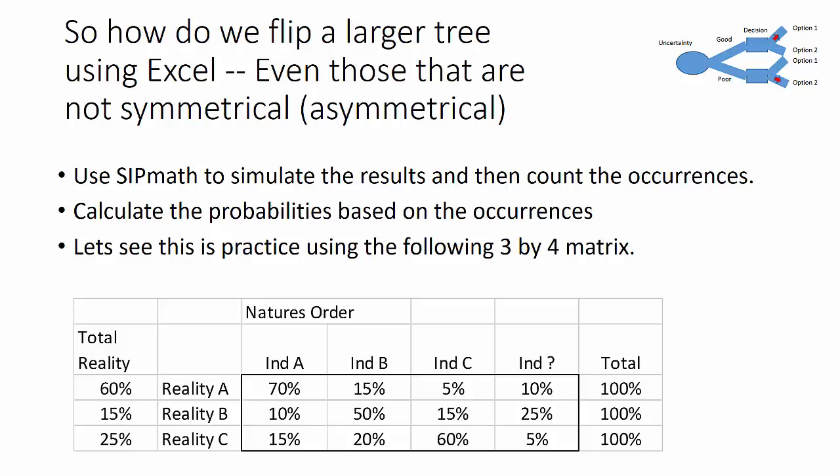Let's see how this goes in practice using the following three by four matrix. We're going to assume that there's three outcomes for reality and each of those realities have a 60%, 15%, and 25% probability.